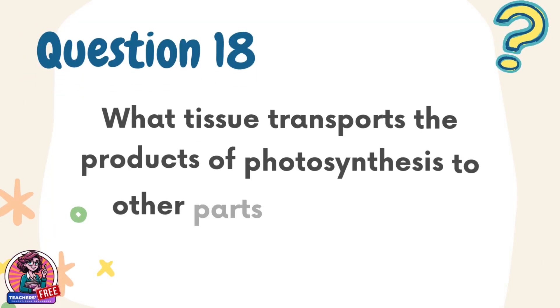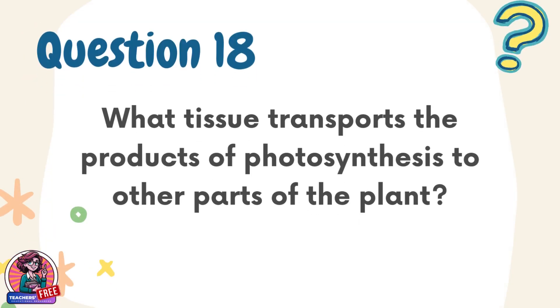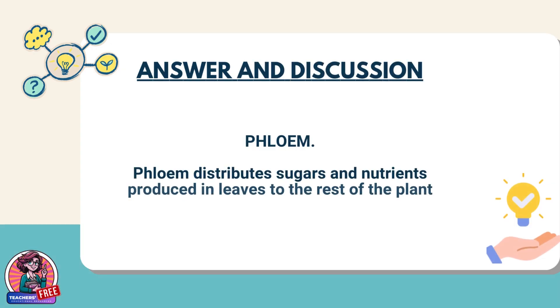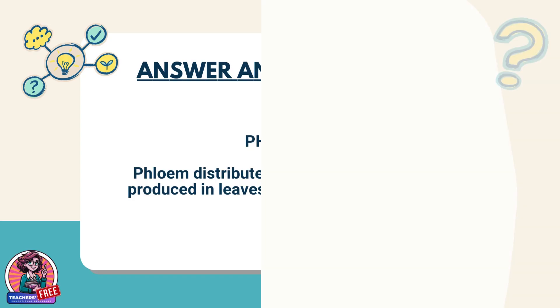Question 18. What tissue transports the products of photosynthesis to other parts of the plant? Answer: Phloem. Phloem distributes sugars and nutrients produced in leaves to the rest of the plant.